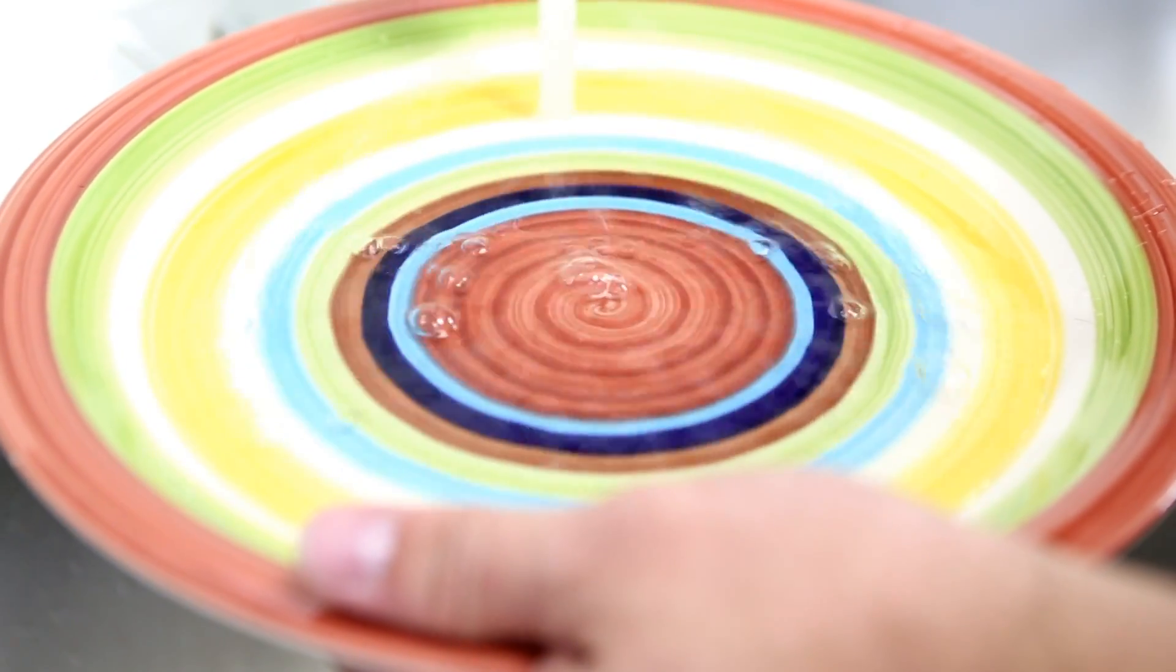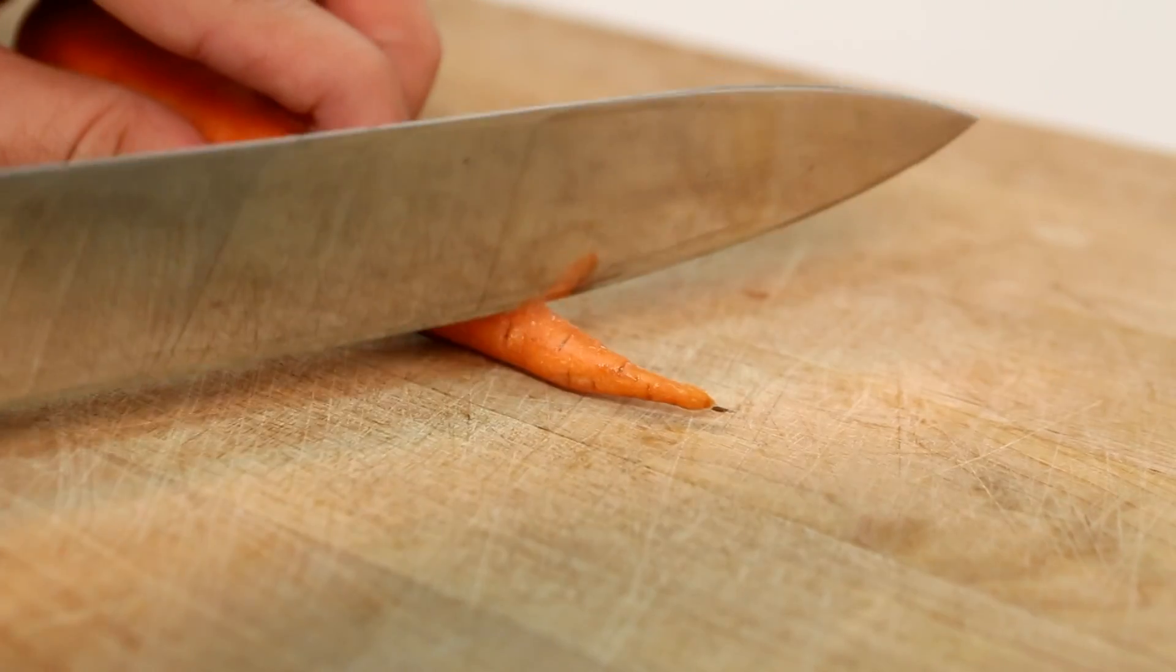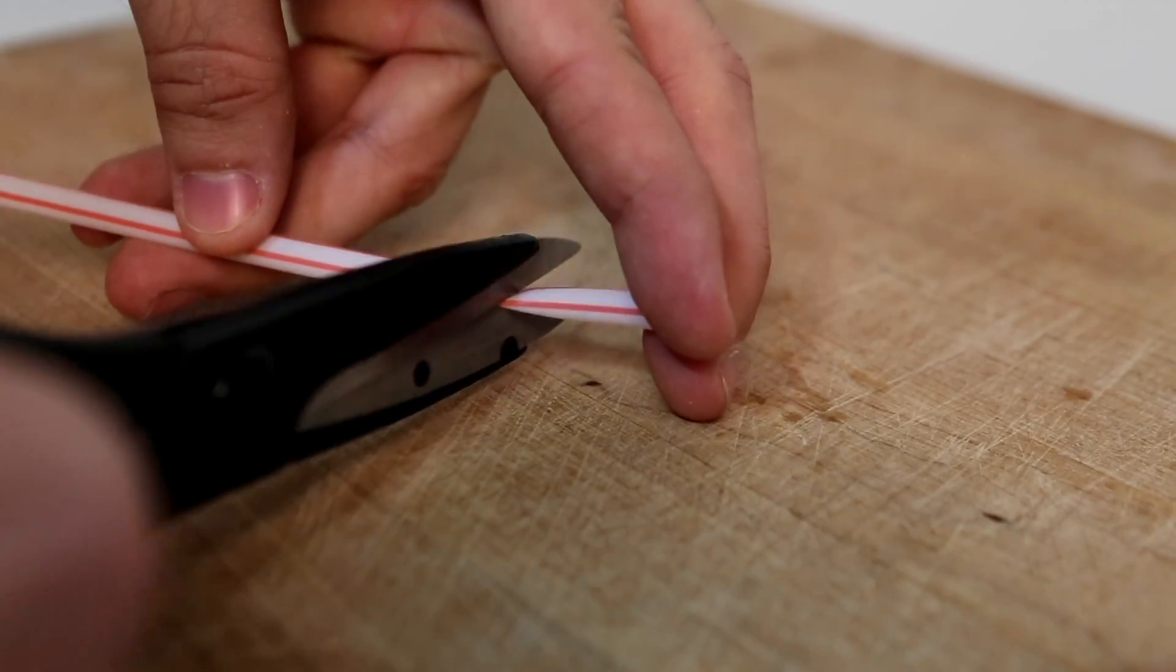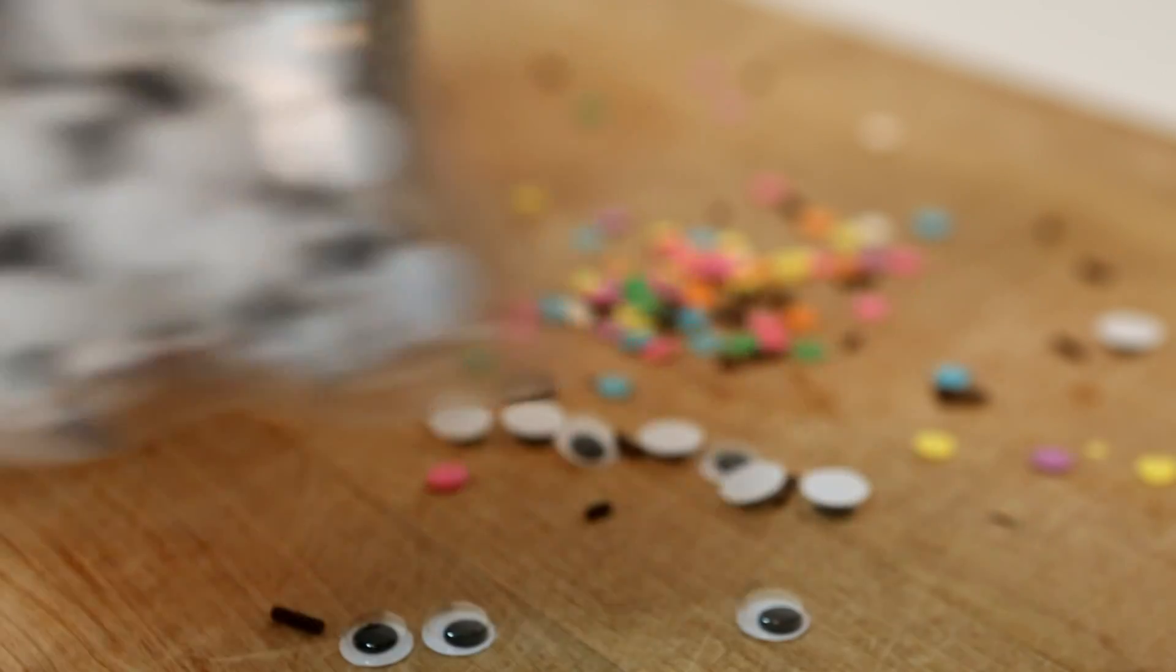Next, let's build a snowman. First, grab a dish and pour in just enough water to fill the surface. Place the dish in the freezer until it's completely frozen over. While you wait, grab some supplies to decorate your snowman. Cut the tip of a carrot for the nose, some straws for arms, some sprinkles for accessories. Googly eyes work too.